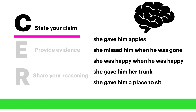You can use a pencil and paper to make a list of all your ideas. In this case, my ideas might include: she gave him apples, she missed him when he was gone, she was happy when he was happy, she gave him her trunk, she gave him a place to sit. These are all things that happened in the story and are things that I might want to make my claim about. I notice as I look at my brainstorming that there are three different things I wrote that deal with giving.